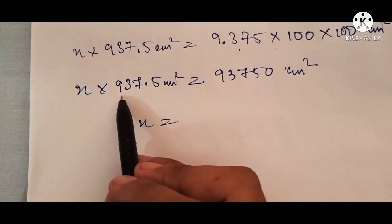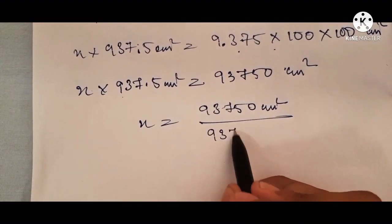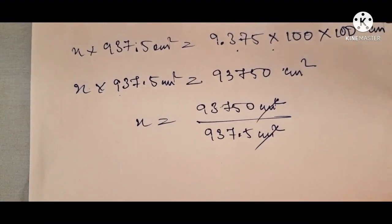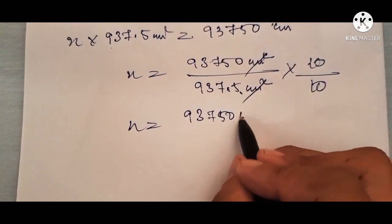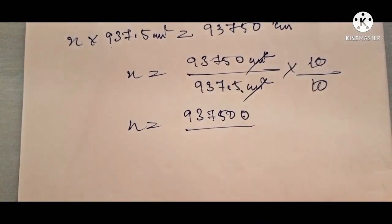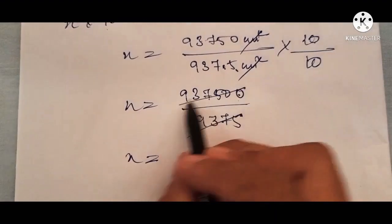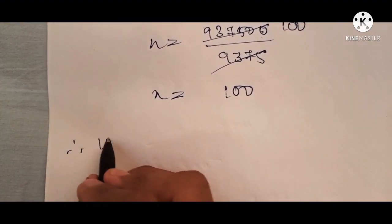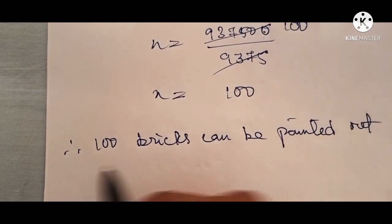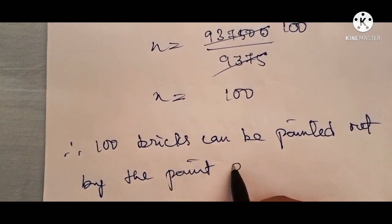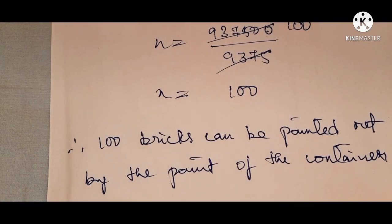Now x equals 93,750 divided by 937.5. The centimeter square units cancel. Multiplying both numerator and denominator by 10 removes the decimal point, giving 937,500 divided by 9375. Simplifying, x equals 100. Therefore, 100 bricks can be painted out by the paint in the container. If you have any doubt, you can comment it down below. Thank you.